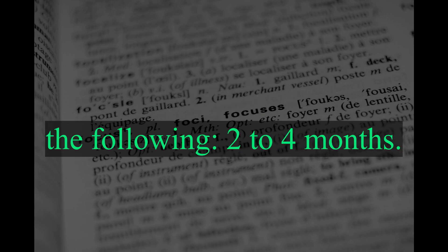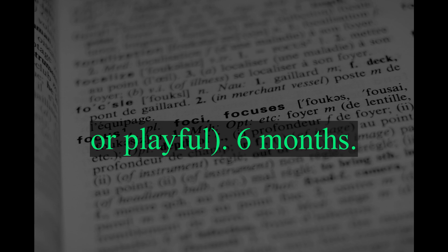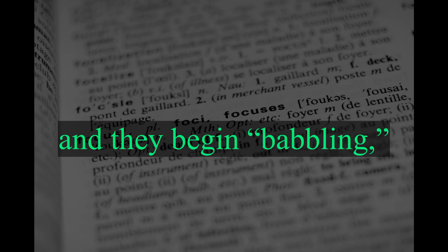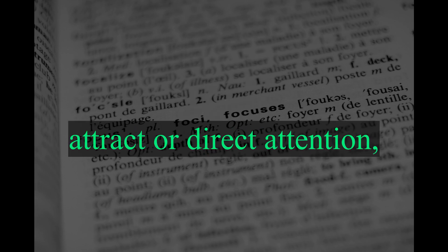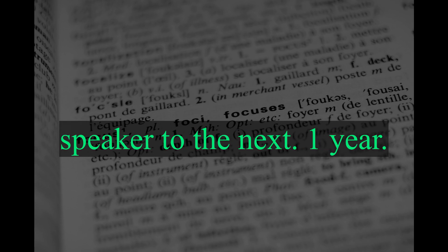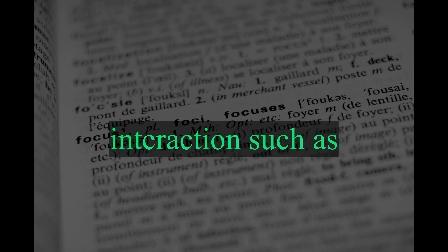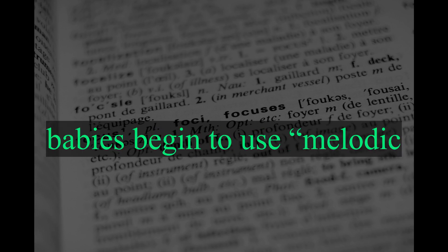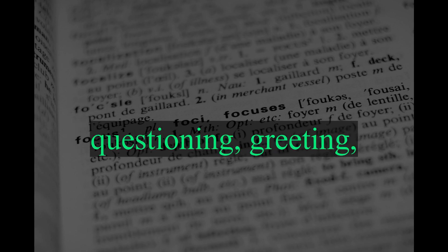These key developments include the following. Two to four months: babies can respond to different tones of voice — angry, soothing, or playful. Six months: babies can associate some words, like bye-bye, with a corresponding behavior, and they begin babbling, which is actually practice for more intelligible speech to come. Eight to ten months: babies learn that pointing can attract or direct attention, and they begin to follow adult conversations, shifting eye contact from one speaker to the next. One year: babies recognize some individual words, people's names, and basic rituals of verbal interaction, such as question-pause-answer and various greetings. Shortly before or after this time, babies begin to use melodic utterances, echoing the variety in pitch and tone in various verbal interactions, such as questioning, greeting, or wanting.